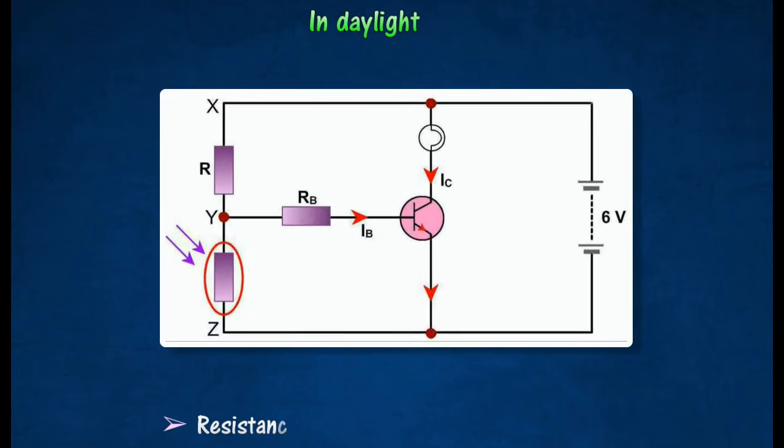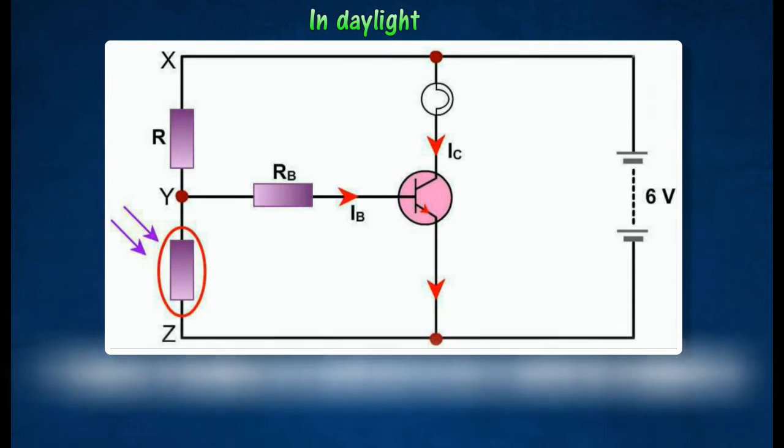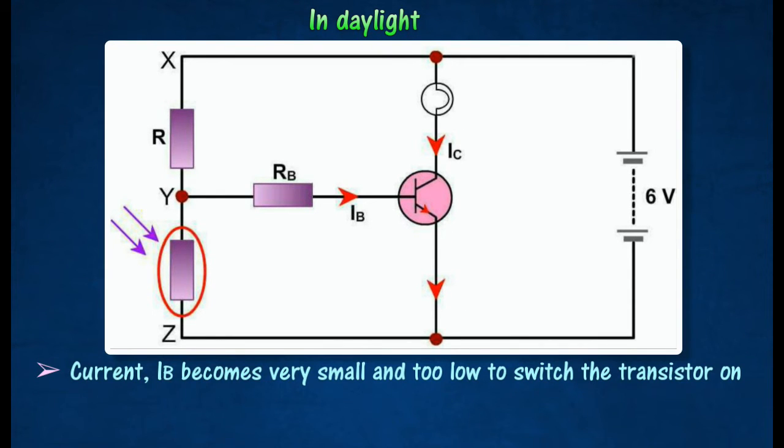In bright light, the resistance of an LDR decreases. This causes the base current to decrease so that the collector current IC produced is not large enough to light up the bulb.